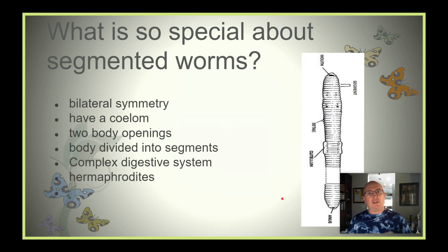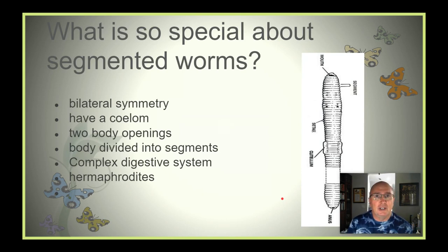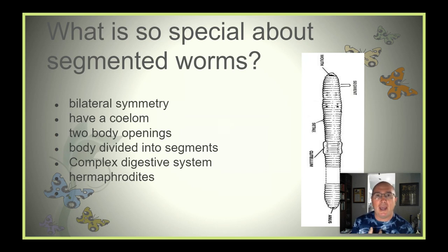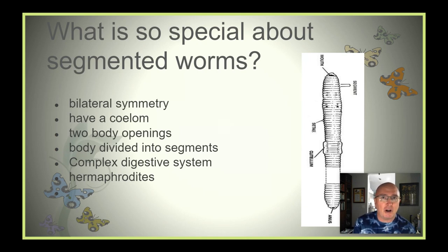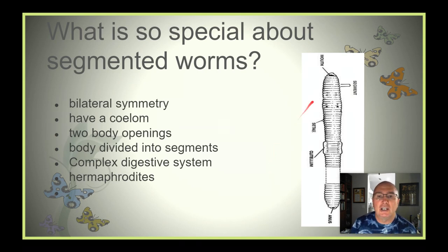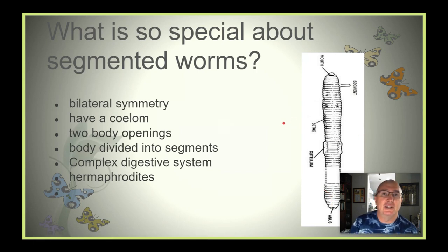Some things that make them very special. One is that they have bilateral symmetry. This is the same type of symmetry that we have. Before, some of the other groups had radial symmetry or no symmetry at all, like the sponges. Now we're talking about bilateral. If you look at this picture here, if you go right down the middle, left side and right side would be similar.